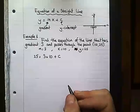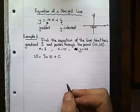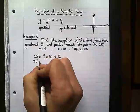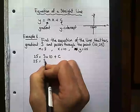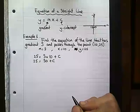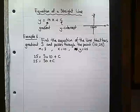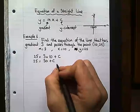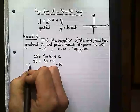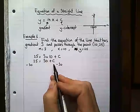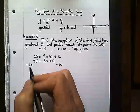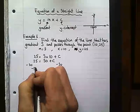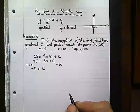Now all I need to do is rearrange this to find out what c is. So 25 equals 3 times 10 is 30, 30 plus c. If I take away 30 from both sides, then I'm just going to be left with my c on the right hand side. 25 take away 30 is minus 5. So my c value must be minus 5.